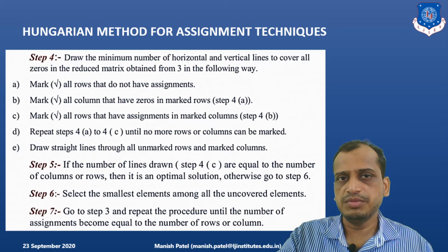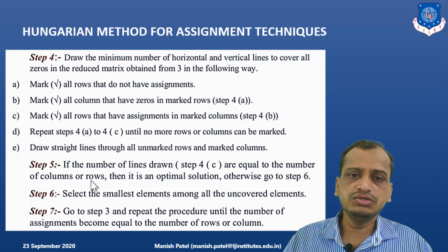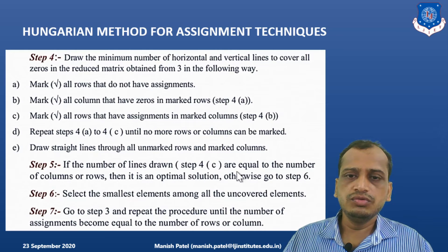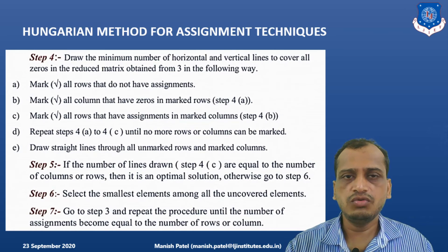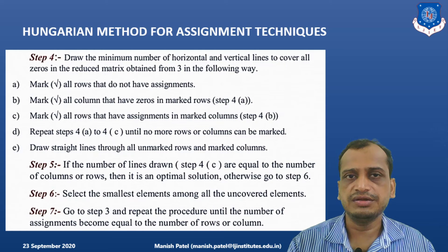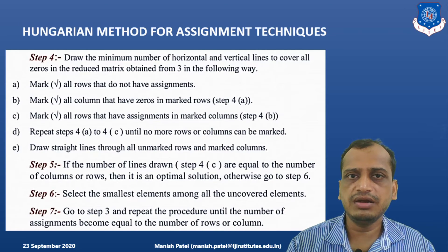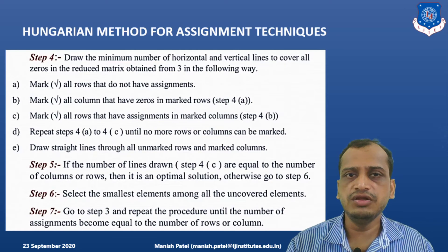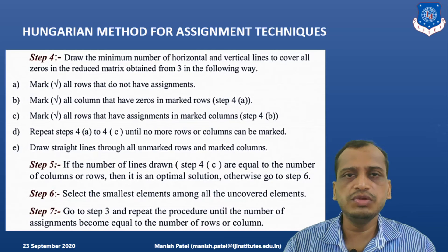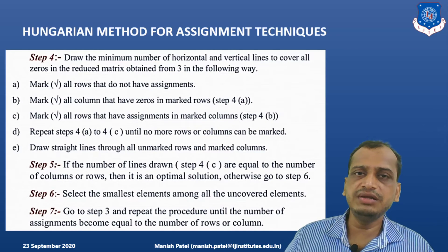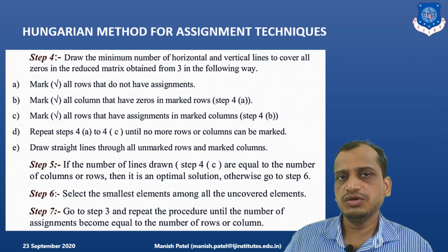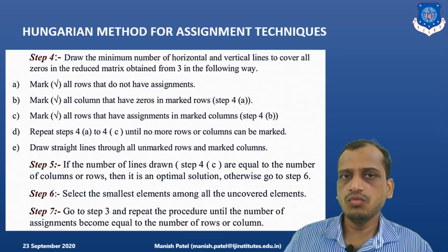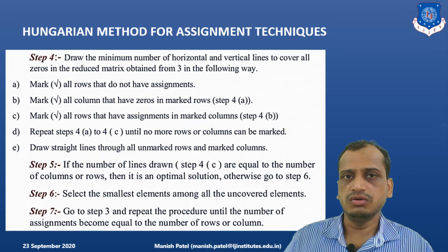Once you have drawn the lines, find the minimum element from the uncovered elements. Add this minimum element at the intersection points, and subtract it from all uncovered elements. This gives a revised matrix. Then restart the assignment process. Repeat until all workers are assigned to different jobs, at which point the assignment problem is solved using the Hungarian method.